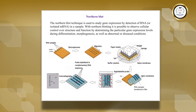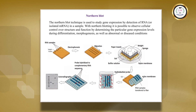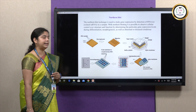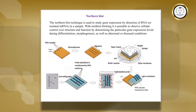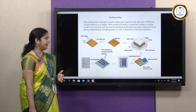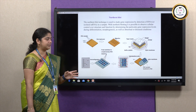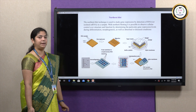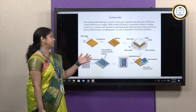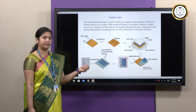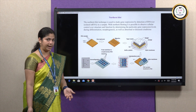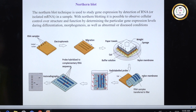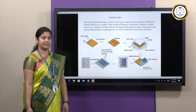In Northern blotting, gene expression is detected by identifying the RNA of the sample. First, the RNA is isolated, then electrophoresis is run and migration allowed. The migrated RNA is transferred to a nylon membrane, which is incubated with radioactive-labelled probes. If the probe hybridizes to the target DNA, radioactivity is released, and based on the autoradiography image, we can determine whether the target gene of interest is present.